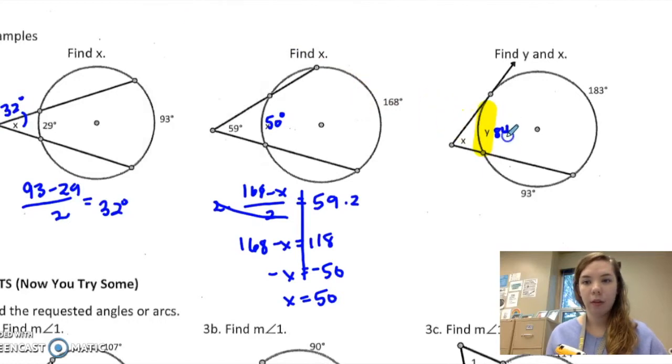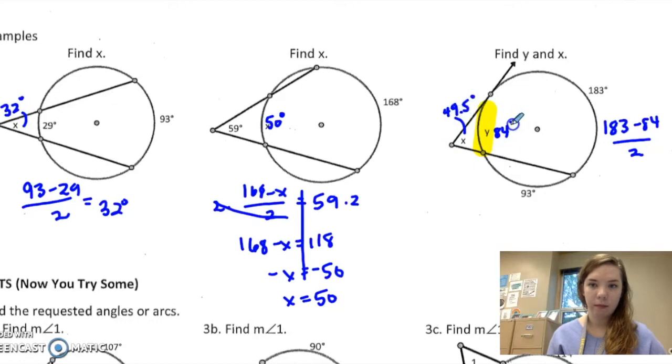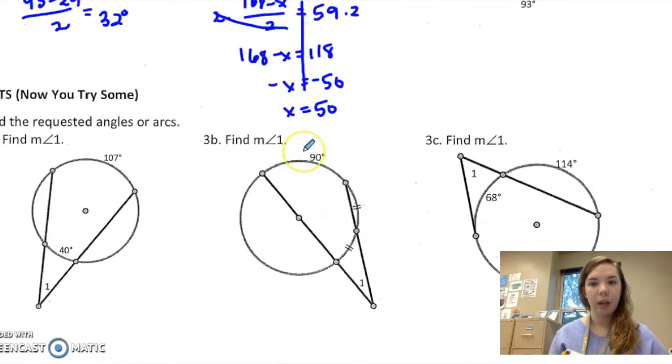Okay, so then to find x I would take 183 minus 84 over 2, or 99 over 2 is 49.5 degrees. Okay, a few more examples.